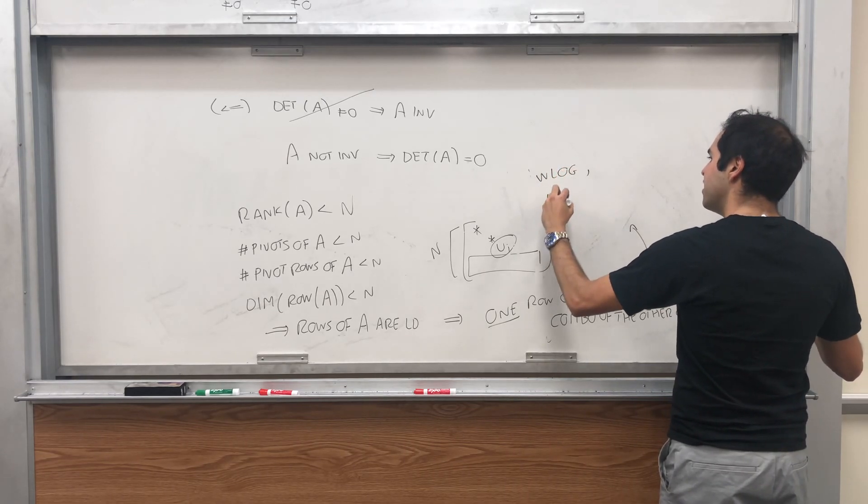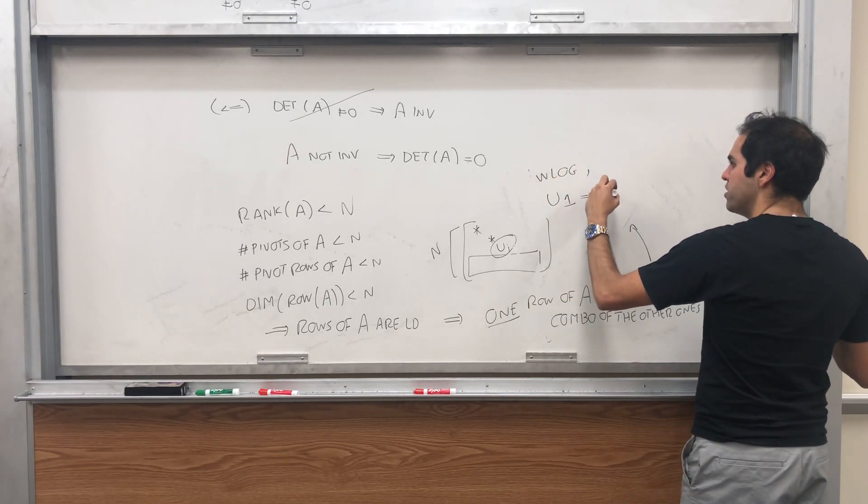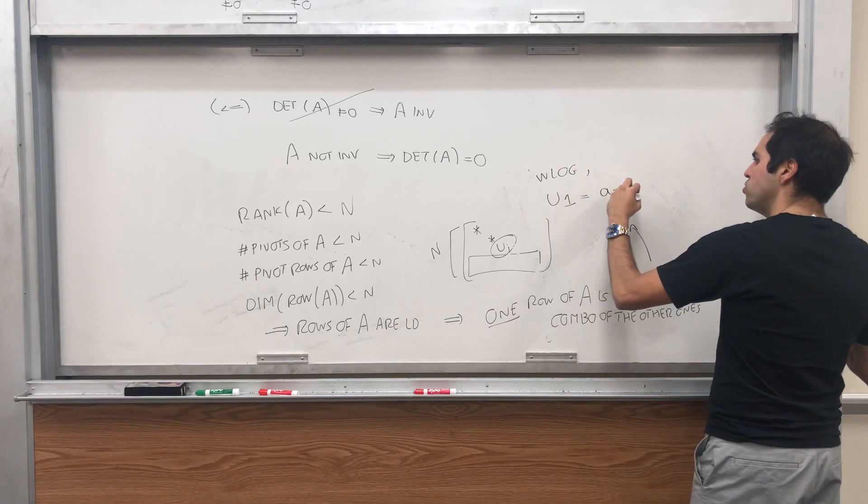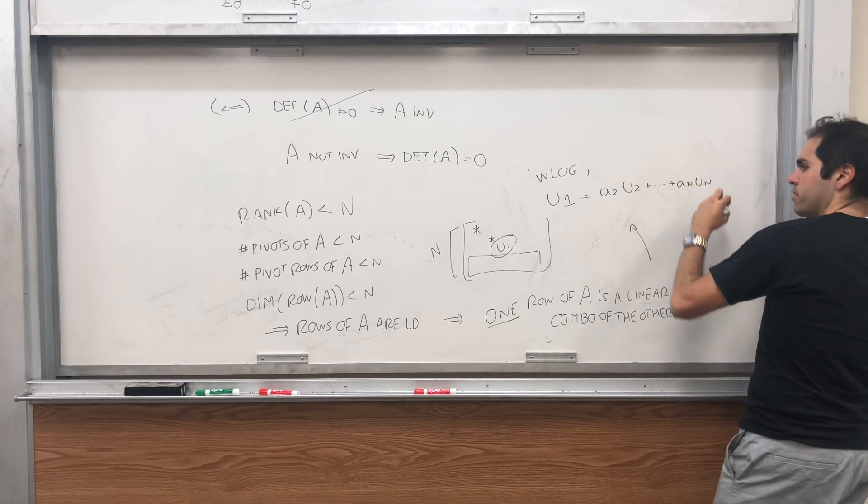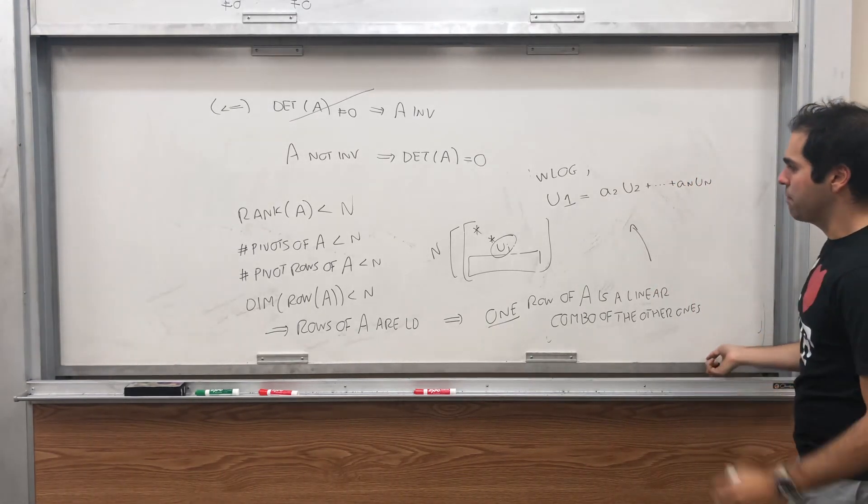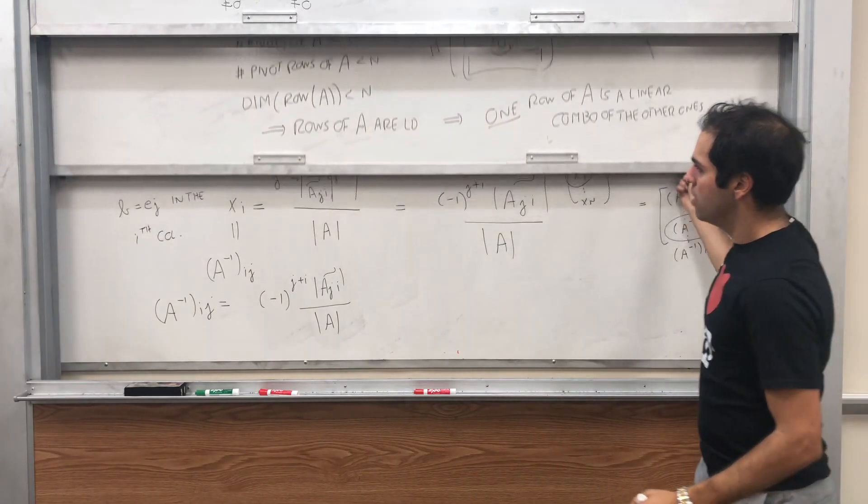So in other words, without loss of generality, assume that the first row is a linear combo of the other ones. So without loss of generality, U1 equals A2 U2 plus dot dot dot plus AN UN, where Ui are the rows of A.